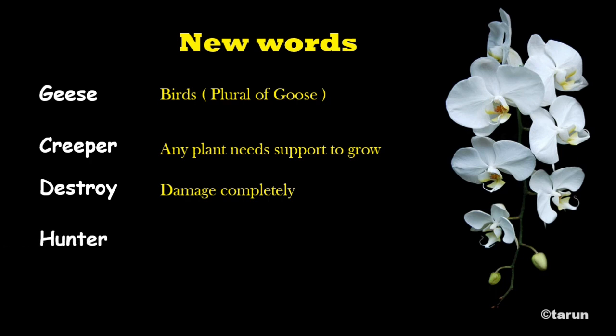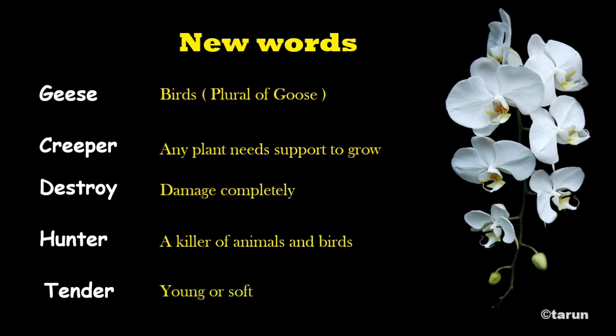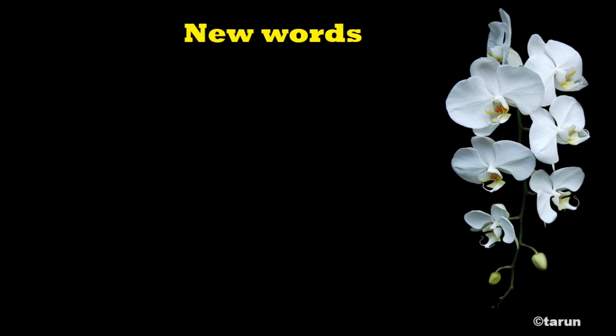Next: 'hunter,' spelled H-U-N-T-E-R. This is a familiar word — you are learning it in EVS also. A hunter means a killer of animals; we can also see the birds. Next one is T-E-N-D-E-R. Tender means young or soft. Next word is W-I-N-D-I-N-G. It is 'winding,' which means turning like a coil — it goes round and round.